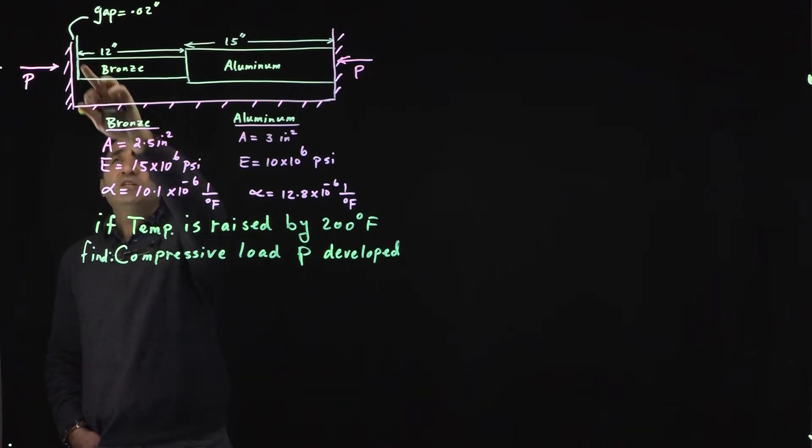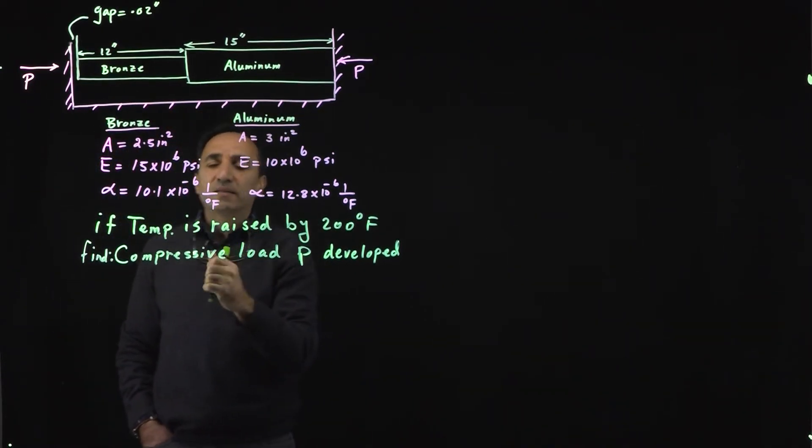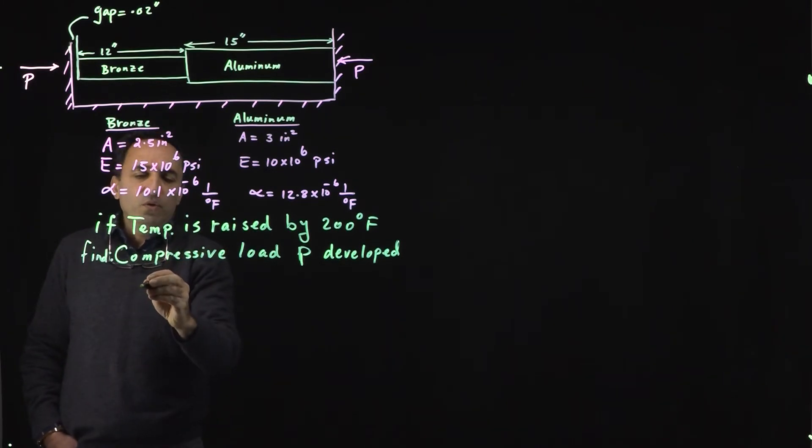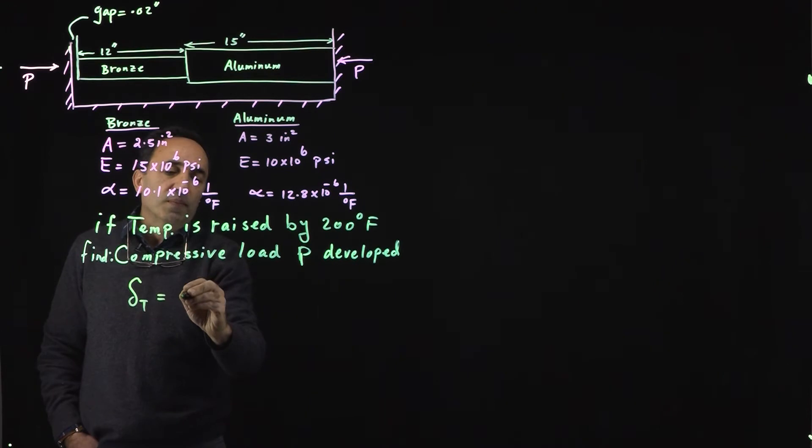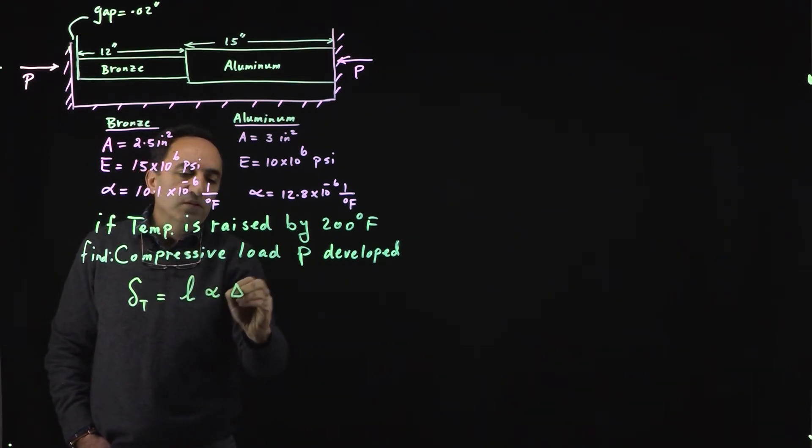Imagine if there wasn't any wall here. How would these guys expand? How much would they expand? We know that the thermal deformation is the length of the bar times coefficient of thermal expansion times delta T.